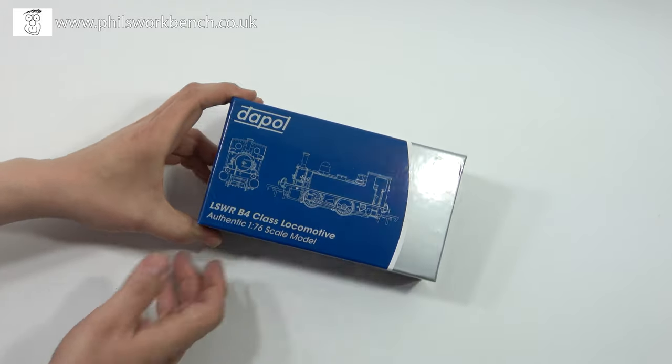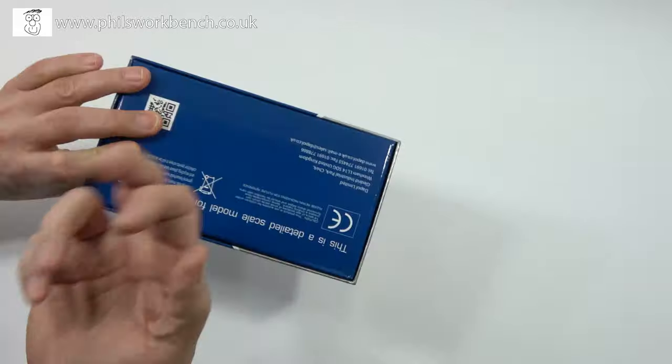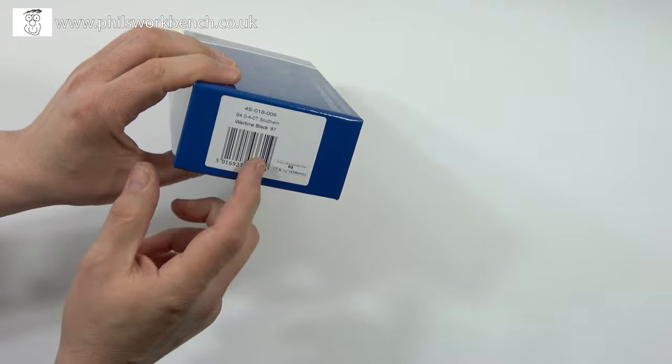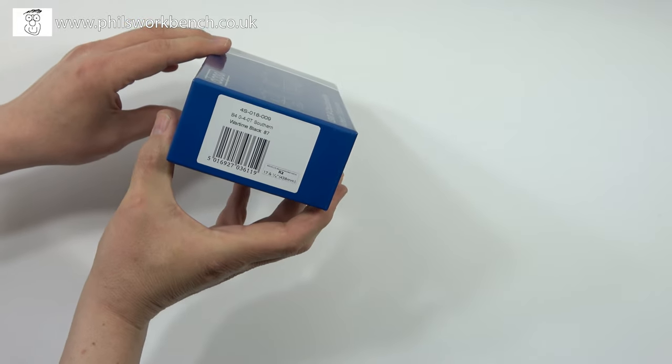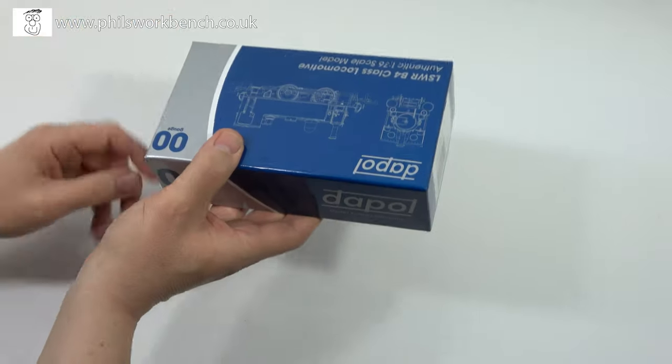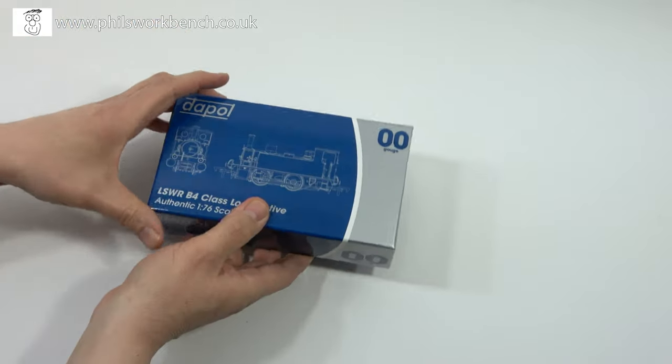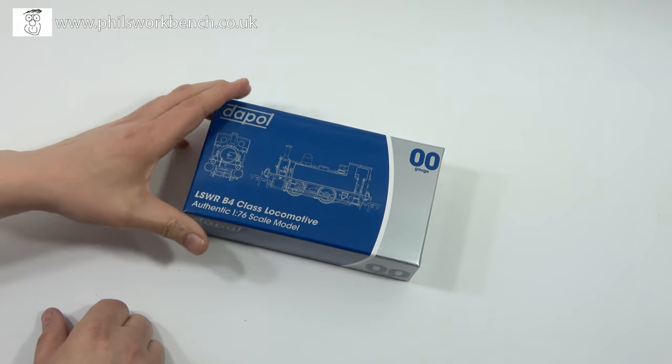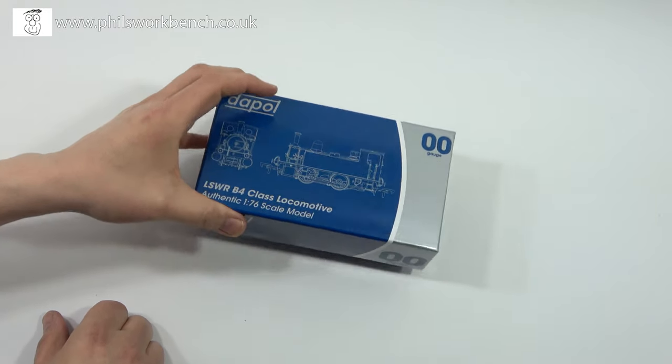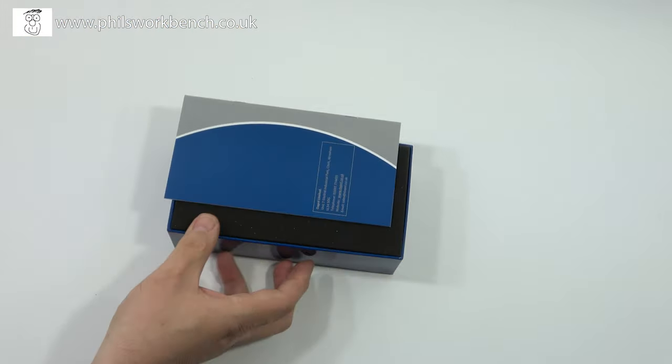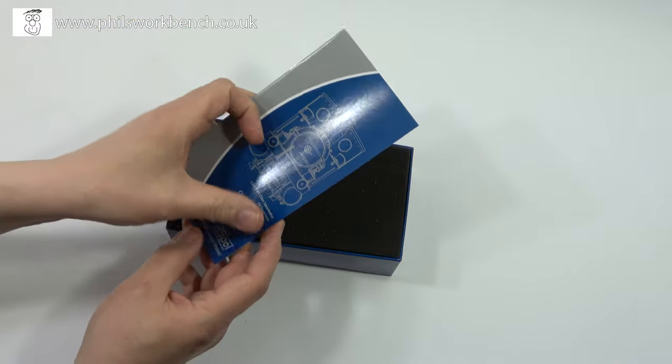Right, let's look at the box. It's a good stout cardboard box. It says Dapol on one end and has a barcode on the other. I've gone for the Southern wartime black, and the reason for that is quite simple: what I want is a BR loco, and BR locos weren't in the offer. Good stout box, let's take the top off.